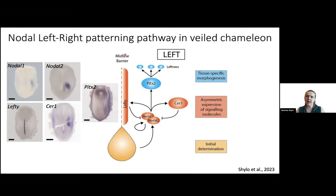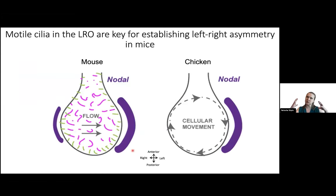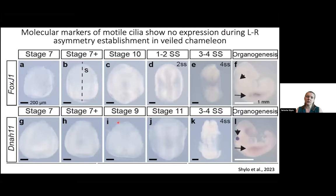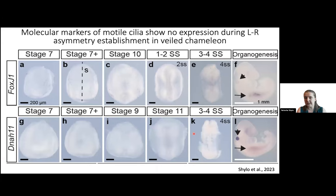I've walked you through this entire cascade of nodal signaling, but I started this talk with the initial step of what happens in the left-right organizer, and so far I haven't told you what happens in chameleons. There are two main ways we know to break symmetry: motile cilia with asymmetric flow in the left-right organizer, or asymmetrical cellular movements. Looking for motile cilia was the first approach. I stained for FOXG1 and DNAH11 — both absolutely required to make motile cilia — at the stages when left-right patterning is occurring, and we don't see expression of either gene. This tells us there are really no motile cilia present in the embryo at the time of left-right patterning.